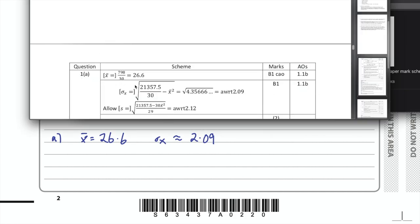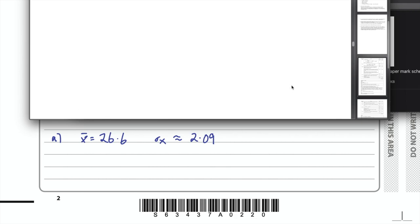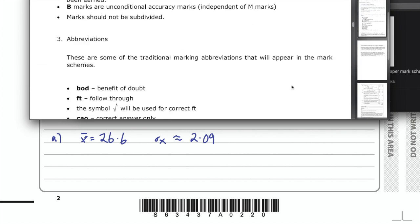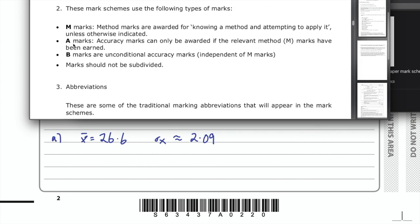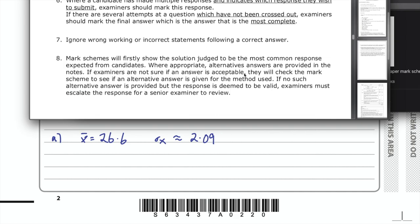Let me bring up the mark scheme to show just part A. The answers are 26.6 and 2.09. B1 is an accuracy mark, meaning you get that one mark if you get the answer correct — you're not getting marked for any working out. M is method marks, B marks are unconditional accuracy marks independent of any method marks. So as long as you get the answer correct, you get those two marks.